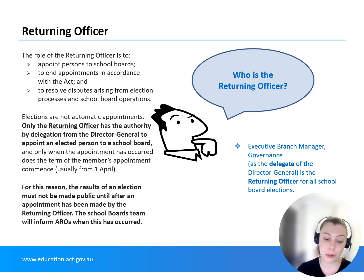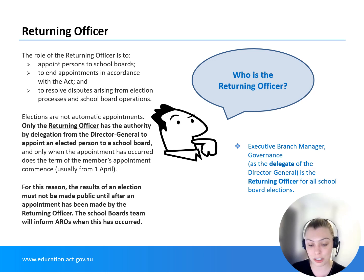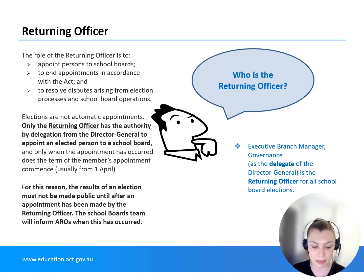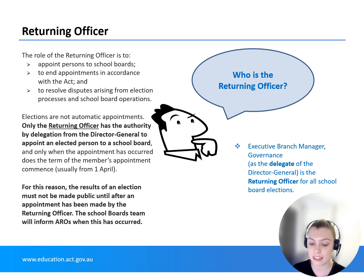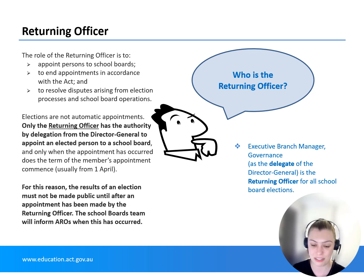With the exception of board appointed members, the returning officer has the exclusive authority to appoint a person to a school board. In all cases, the term of the member's appointment does not commence until the appointment has been formally made by the returning officer. The results of a selection process must not be made public until after an appointment has been made by the returning officer and the result has been provided to the principal by the Education Support Office.